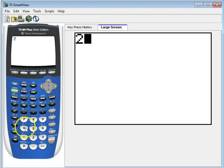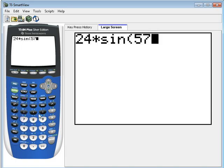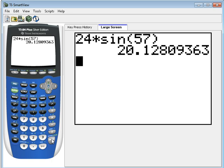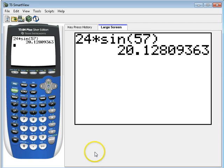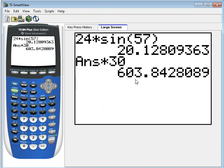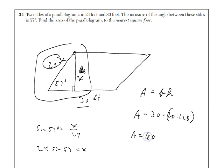On the calculator, 24 times sine of 57 is 20.128. They went to the nearest foot. So, well, this is 20.128. I'm not going to round on my calculator. I'm going to just multiply that by 30 right now. Best to save you rounding until the end. And get 603.8, which rounds to 604 square feet.